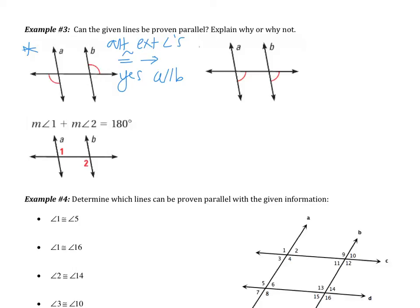For the second one, we have corresponding angles. So you should have gotten that yes, a is parallel to b, because we have corresponding angles congruent. Of those four ways to prove lines parallel, only one has to be true. I don't need to show corresponding angles and alternate exterior and alternate interior — I only have to show one angle pair. Here I have one angle pair; therefore, my lines are parallel.